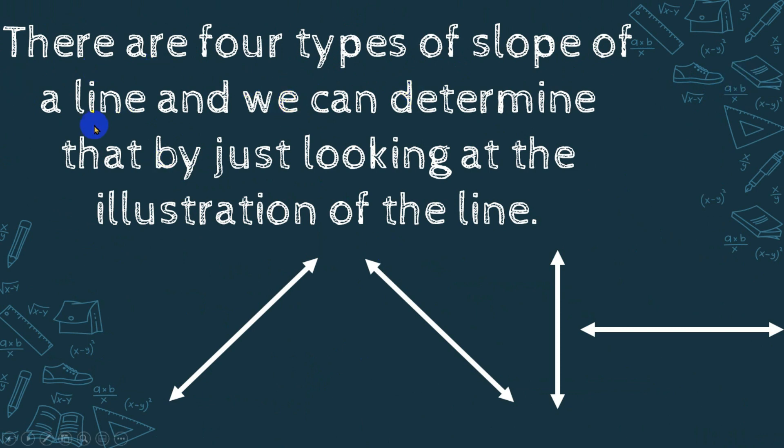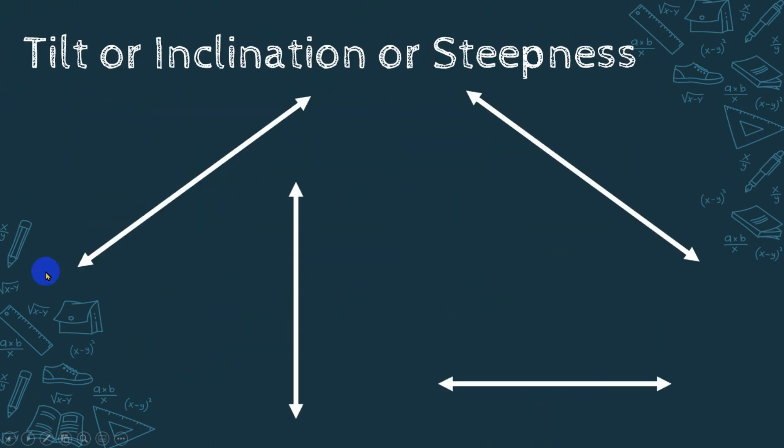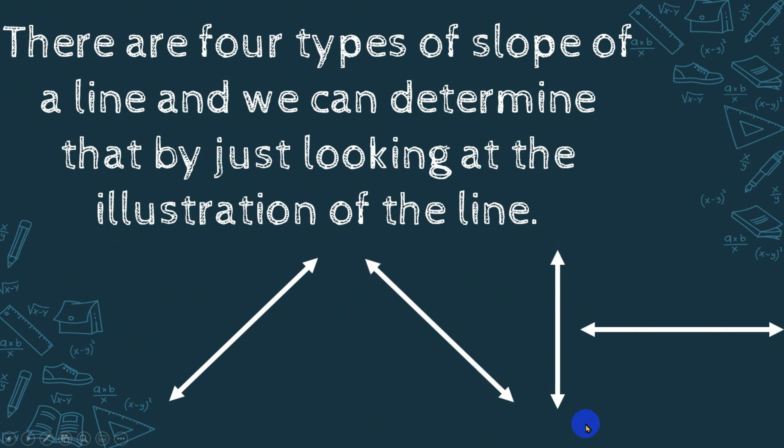There are four types of slope of a line, and we can determine that by just looking at the illustration of the line. Again, we have upward from left to right, downward from left to right, vertical, and horizontal.